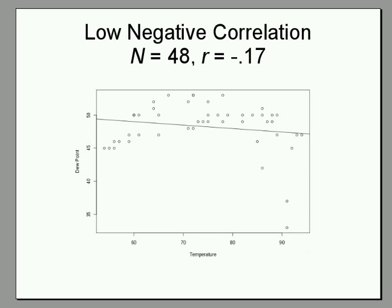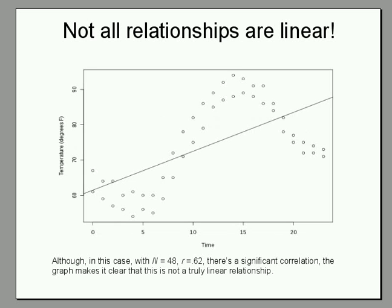One important thing to notice is that the correlation coefficient is for a linear relationship, and not all relationships are linear. Here, for example, on the x-axis is the time of day and on the y-axis is the temperature in degrees. Even though a straight line fits this data fairly well with an r of 0.62, it's very clear from the graph that the relationship is not really linear.